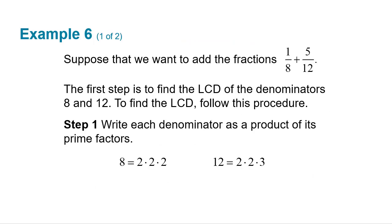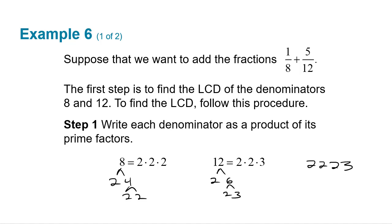Here's the least common denominator method in case you want to see it. We write them out in their prime factorization using prime factor trees: eight is two times four, and four is two times two; 12 is two times six, which is two times three. So we have two, two, two from eight, and two, two, three from 12. The least common denominator has to include the largest amount of each prime: I need all three twos and the three. Two times two times two times three is 24 — there's our least common denominator.